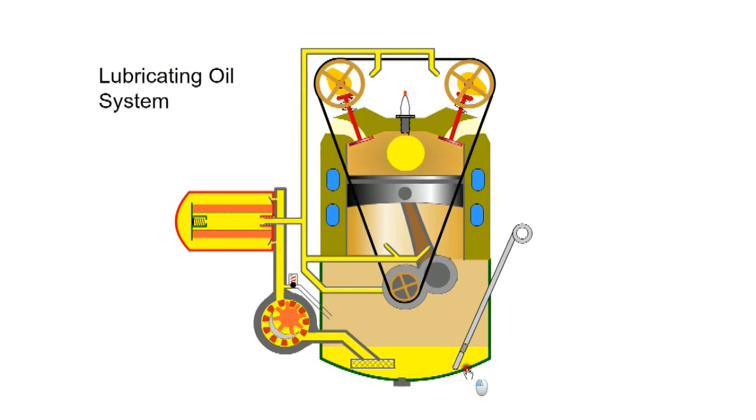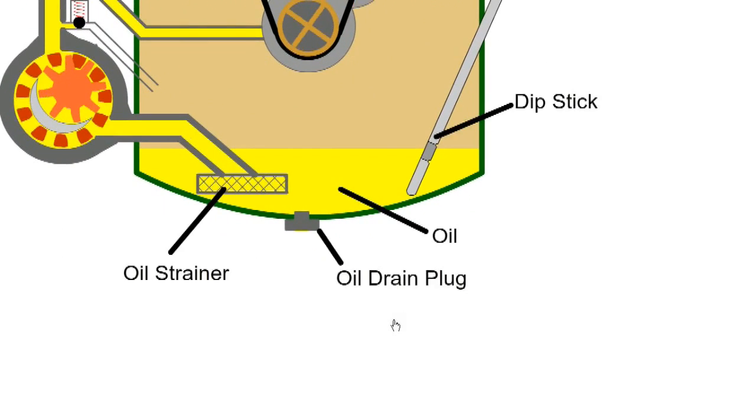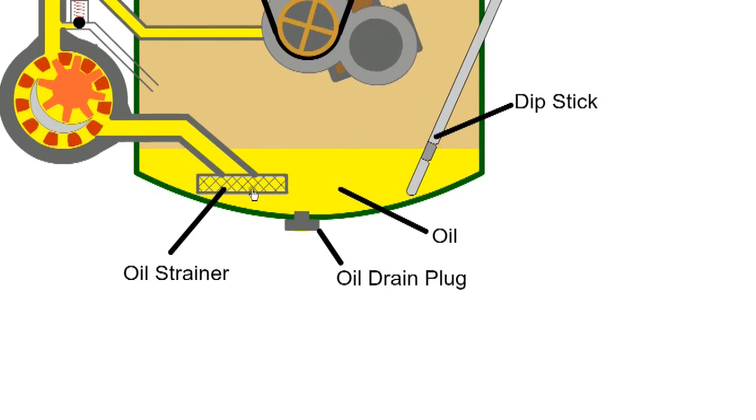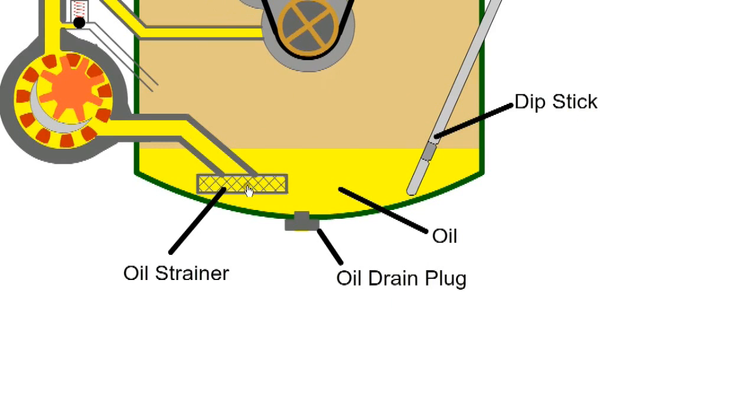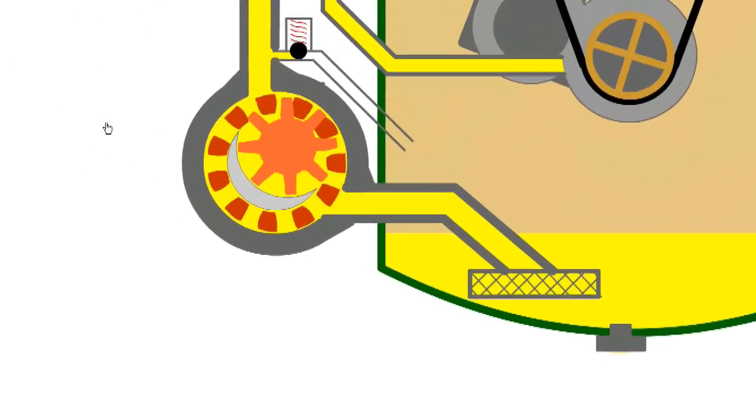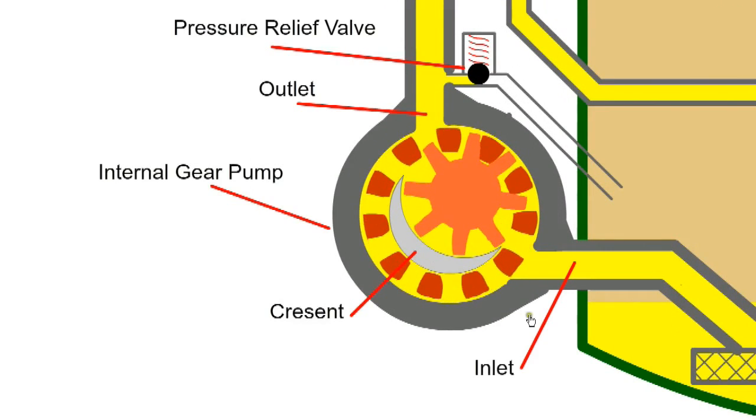The sump or oil pan provides storage of oil for the system and oil level can be checked with a dipstick. At the end of the pick up tube a wire mesh strainer protects the inlet to the pump. The oil level must be above the level of the inlet strainer but not so high that it will foul the rotating crankshaft.